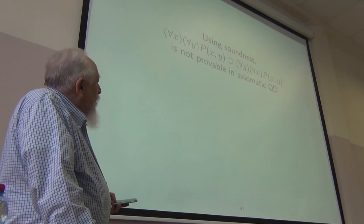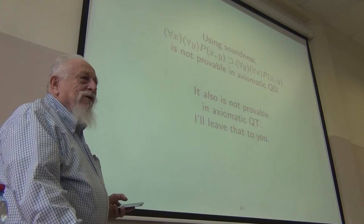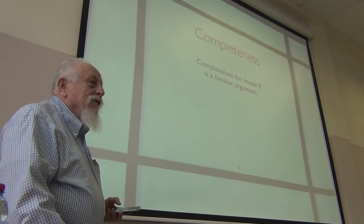So quantifier commutativity is not provable in QD. It's also not provable in QT, but you have to modify the model a little — I'll leave that to you.